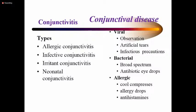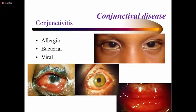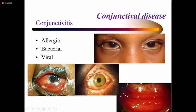For viral conjunctivitis, observe and give artificial tears; be careful of secondary bacterial infection. For bacterial conjunctivitis, give broad-spectrum topical antibiotics — systemic antibiotics are needed for ophthalmia neonatorum. For allergic conjunctivitis, give anti-allergy medication with cool compresses — for allergy you use cool or ice water compresses, not warm. Chronic untreated allergic conjunctivitis can lead to brownish pigmentation of the conjunctiva, indicating long-standing uncontrolled inflammation.